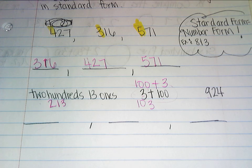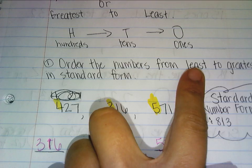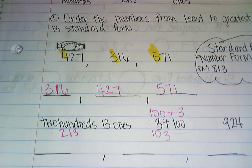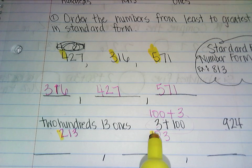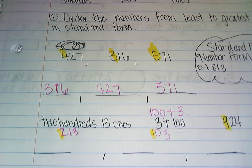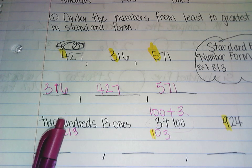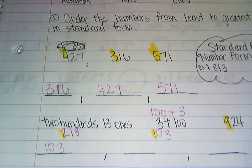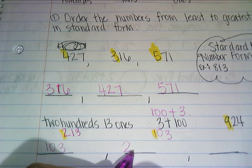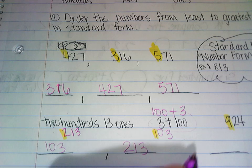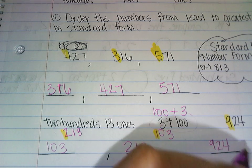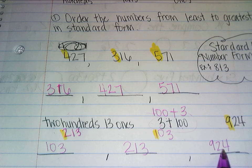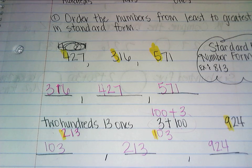So I'm going to order it from least to greatest. I want to find that digit in the hundreds place. I have a 2, a 1, and a 9 — so 200, 100, or 900. 103 would go first because that's the least. Then the next higher number is 213. And the last number is 924. It goes least, then it gets higher, and then it's the greatest — the highest number is last.